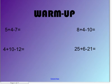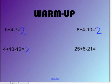Let's warm up. 5 plus 4 equals 9, minus 7 equals 2. 4 plus 10 equals 14, minus 12 equals 2. Now you guys try it. Derek, how about you try 8 plus 4 minus 10? 8 plus 4 equals 12, minus 10 equals 2. Correct. You get 2 as your answer.